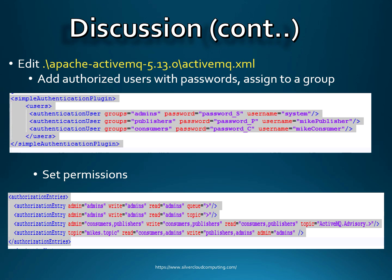Admin can do anything they want. Looking at the section for mikes.topic, you can see where it says 'read equals' — those are the groups that can read from the JMS instance — and 'write equals' — those are the groups that can write. Only publishers can write and consumers can read, and admin can do anything. The line referencing 'activemq.advisory' is left in so that if you're an ActiveMQ admin and want to send broadcast messages to everybody, this is how you do it through that topic.